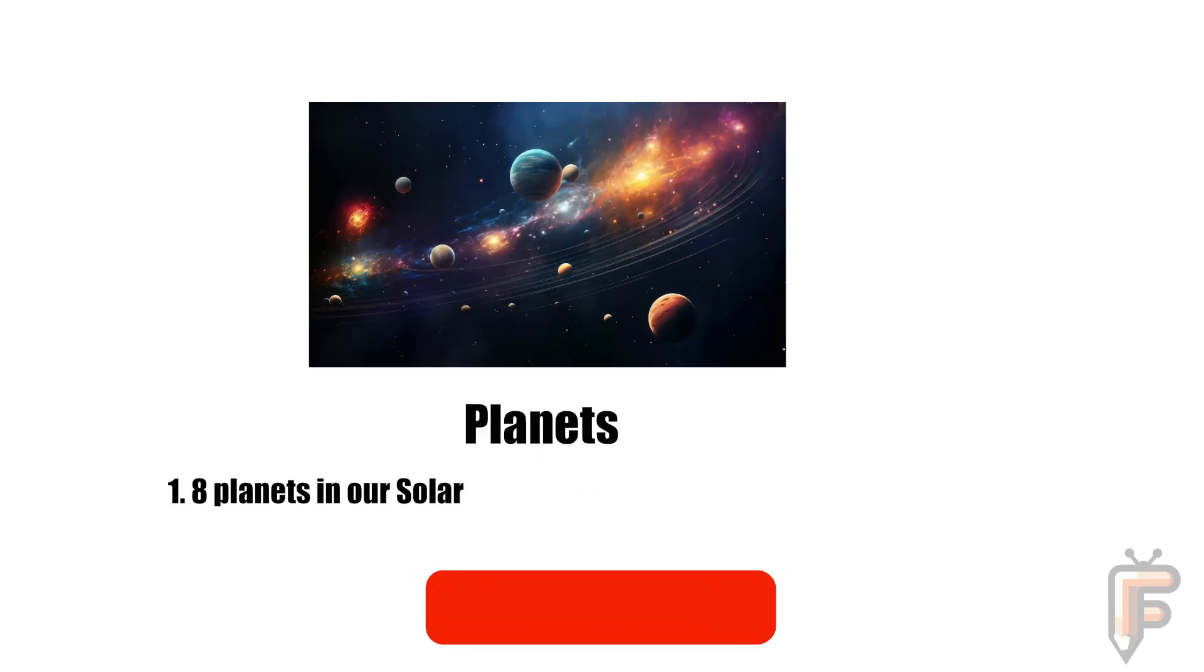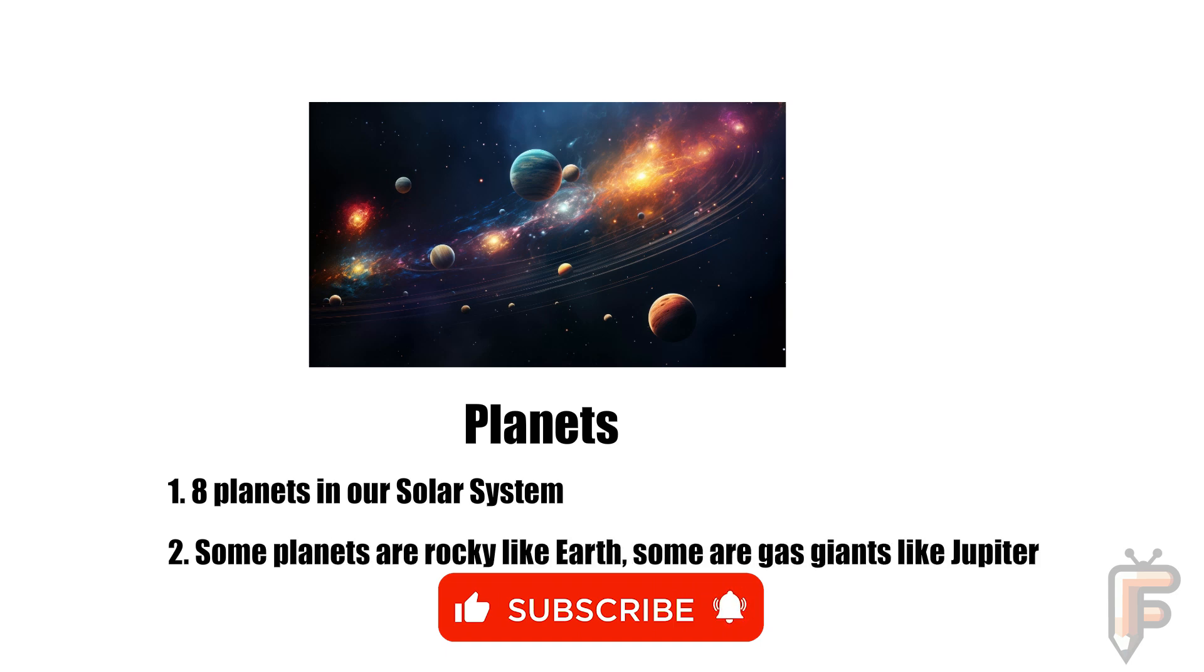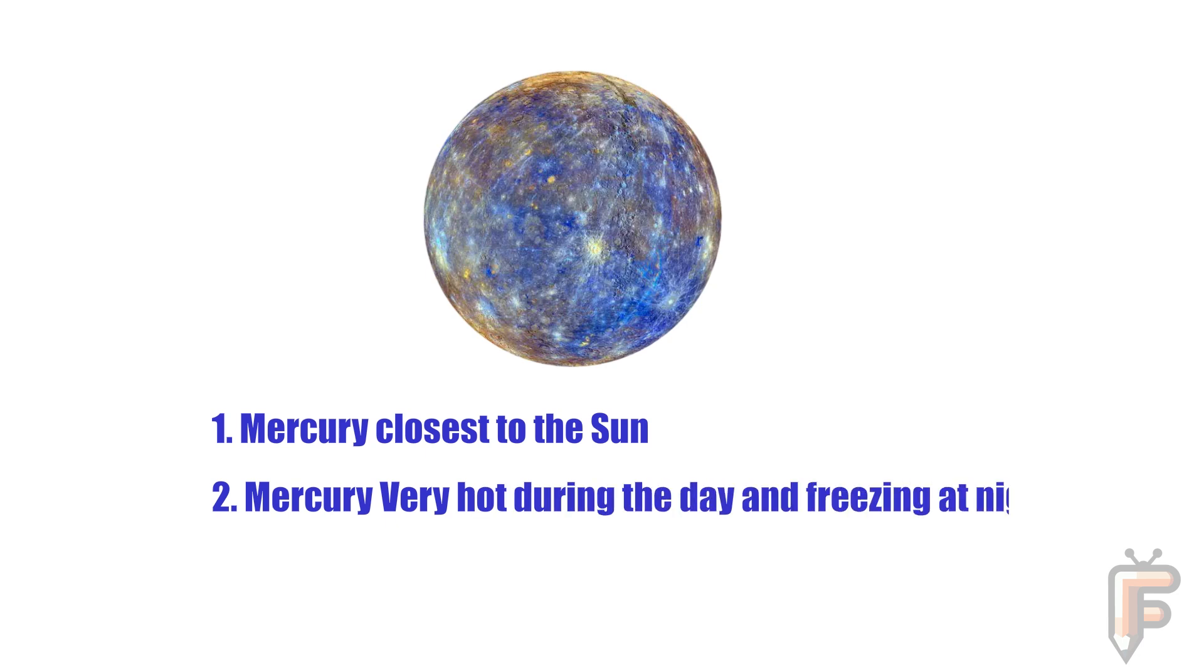There are eight planets in our solar system. Some planets are rocky like Earth. Some are gas giants like Jupiter. This is Mercury. Mercury is closest to the Sun. Mercury is very hot during the day and freezing at night. This planet has no air and no moons.